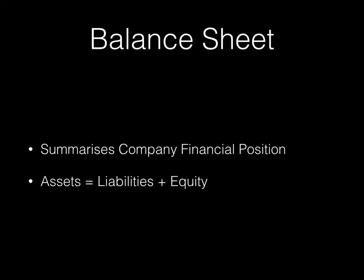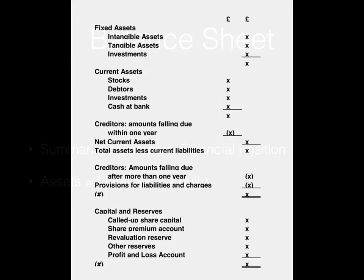The higher the assets and the lower the liabilities, the better position a business is in. From the actuarial core reading, I've taken just this little example to show you what a balance sheet looks like. You can see here are the assets, and you have your equity, and you have your liabilities. The formula is: assets equals liabilities plus equity. If your assets are bigger than your liabilities, that residual would then be your equity.